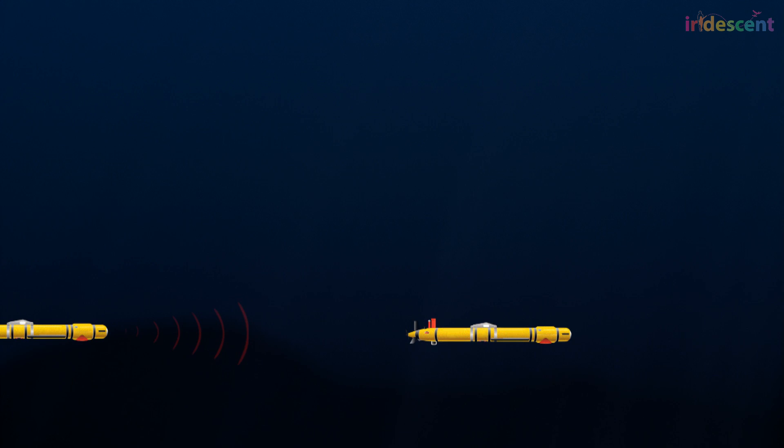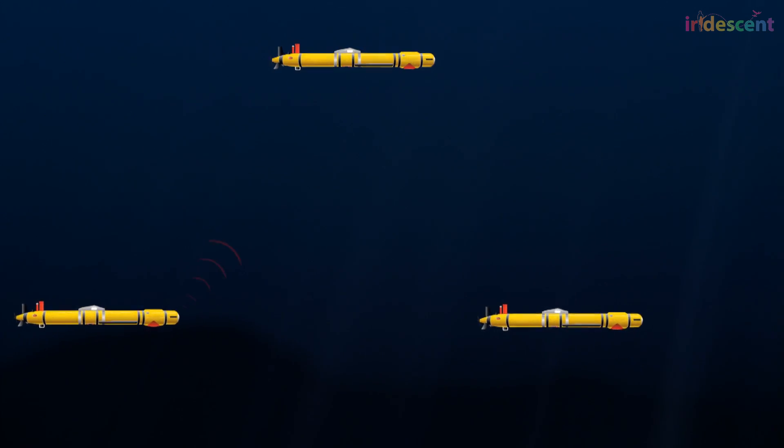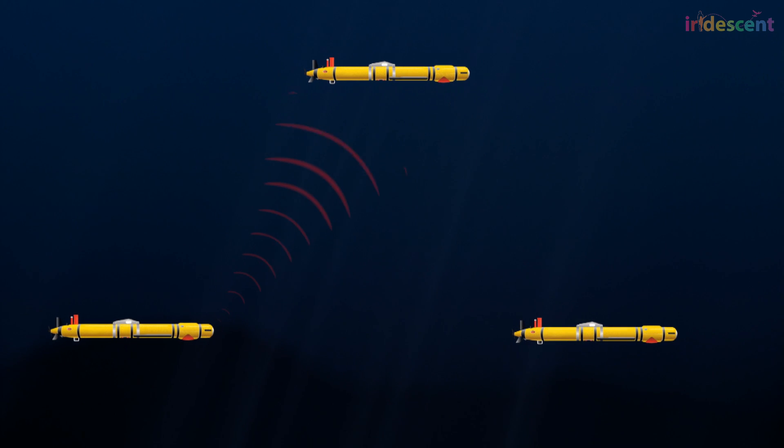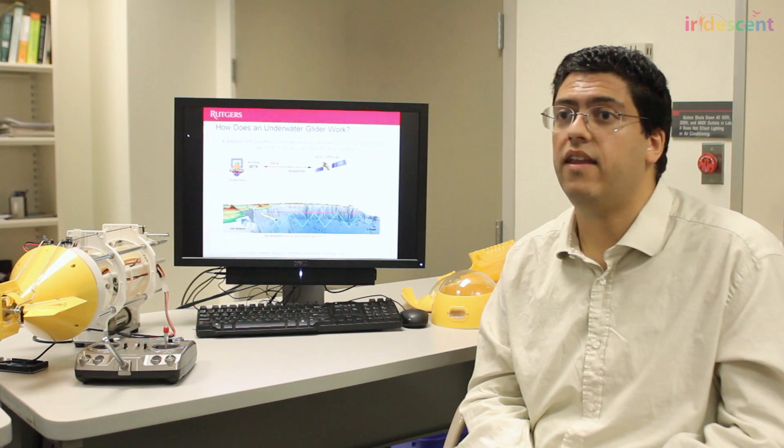So if you add underwater acoustic communication, you could have one of the vehicles on the surface to play the role of a relay node. It could basically relay the information from gliders underwater and use the satellite communication to play the role of a bridge. And this would make the entire mission much more efficient.